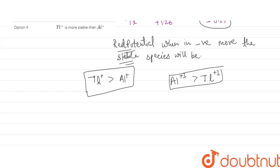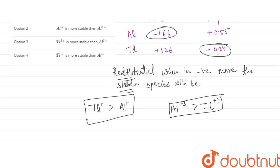What is the reason? Because it is having a negative value and we all know that when the reduction potential is in negative value, more stable the species will be. So here we can see, from these, these two are the correct statements.